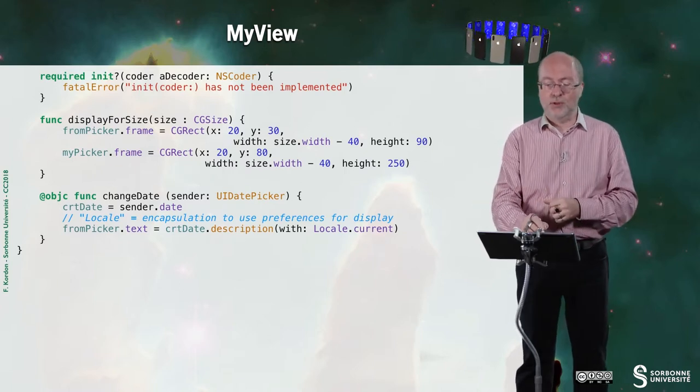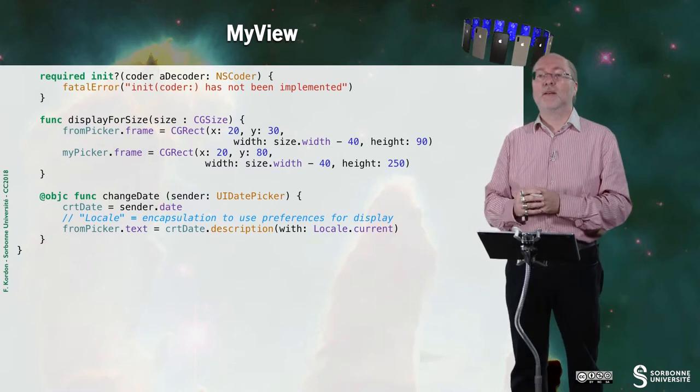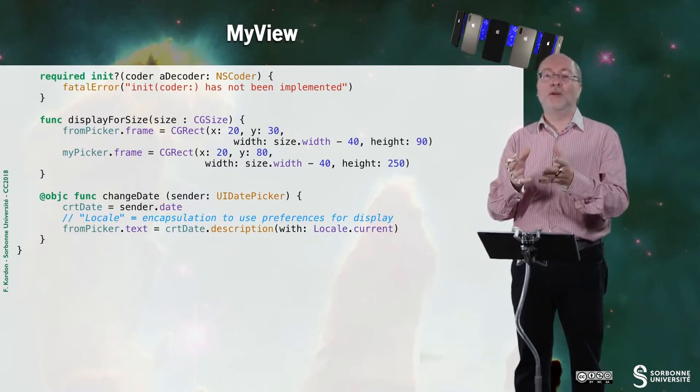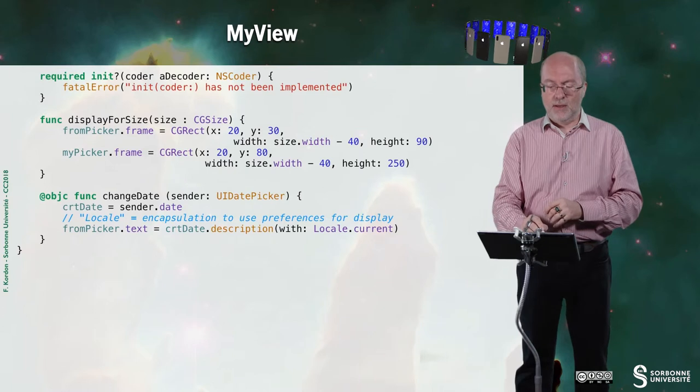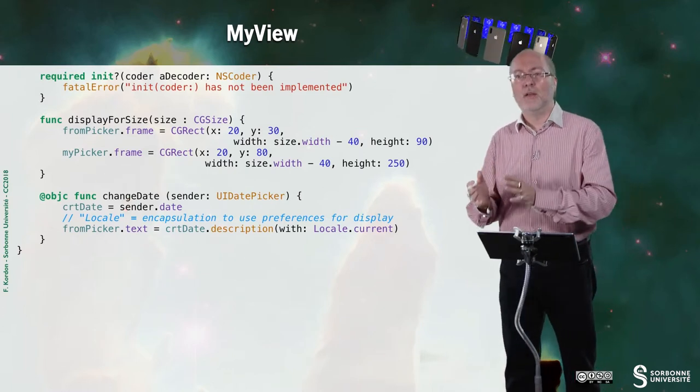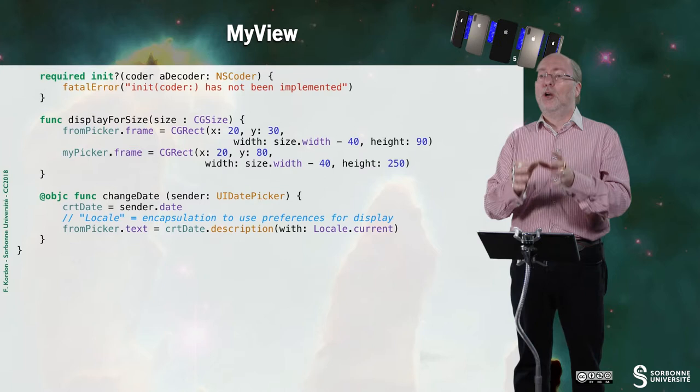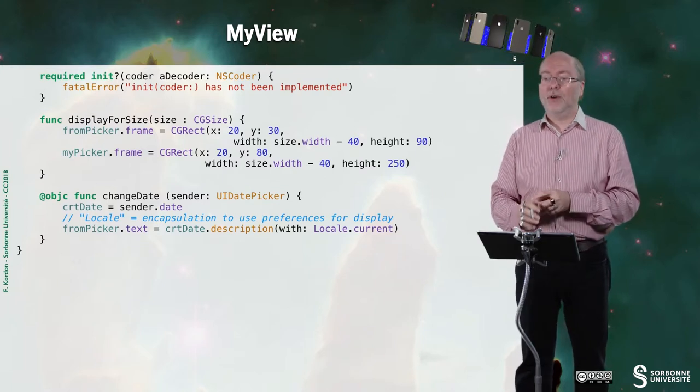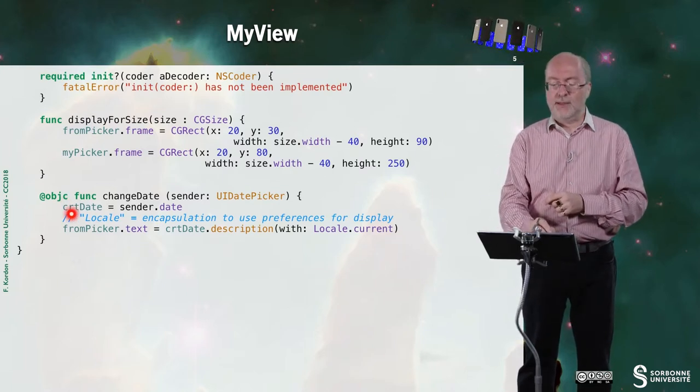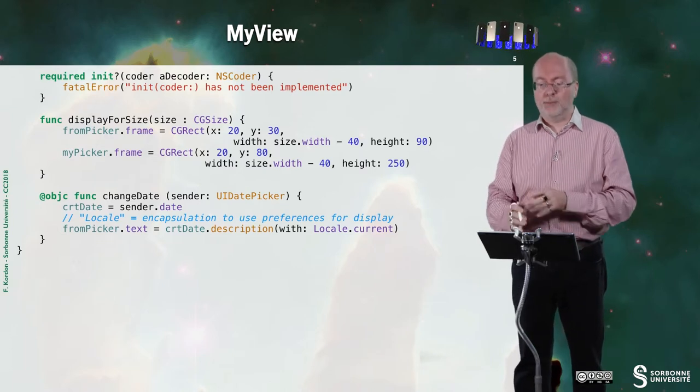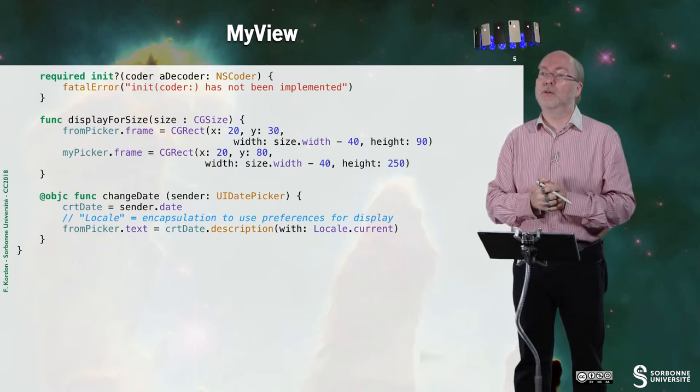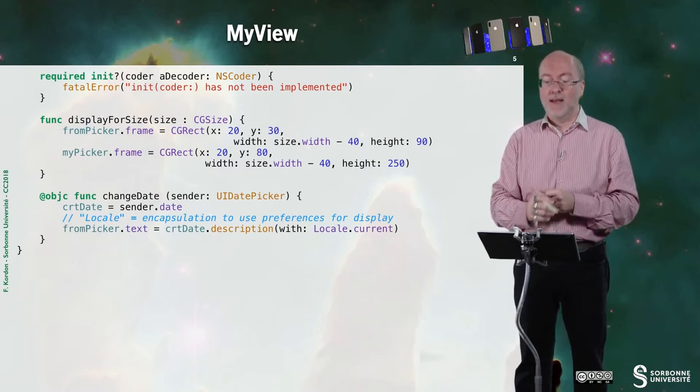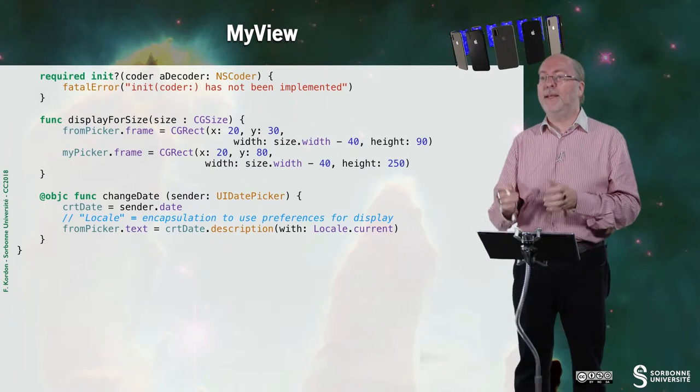And here we have associated the function changeDate. That is associated to the UI picker with addTarget. We do that in the init. And then we have to program the changeDate function that is associated to the date picker. So here we set that currentDate is the date provided by the picker. The picker is passed as a parameter. So it's the sender.date. And then we just display it.